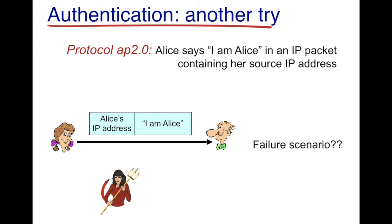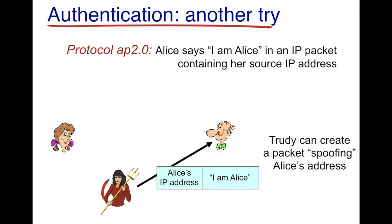Let's improve upon this protocol — version 2.0. Alice says 'I am Alice' in an IP packet containing her source IP address and sends it to Bob. This protocol also has a drawback. What Trudy could do is send the same IP packet to Bob, but instead of putting her IP address, she inserts Alice's IP address. This is known as packet spoofing. When Bob receives this message, he believes it came from Alice and not from Trudy.